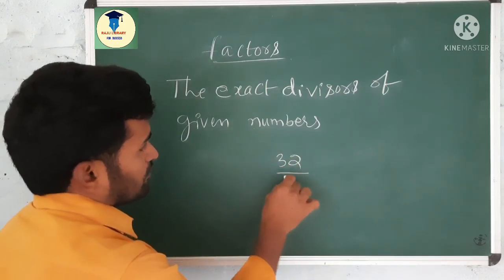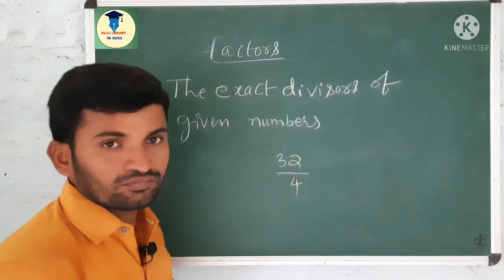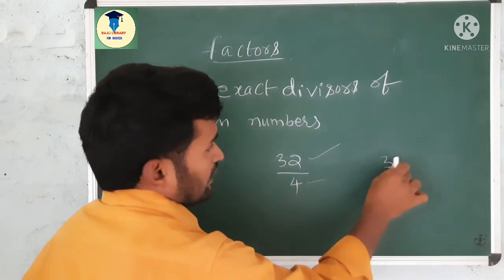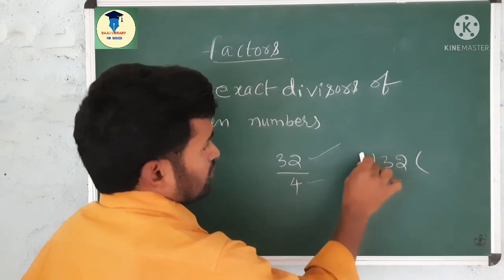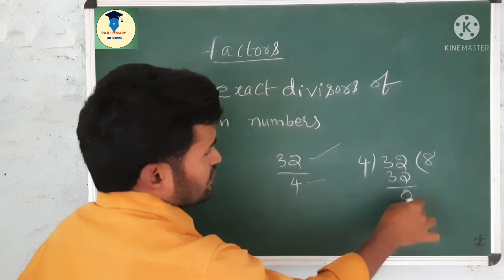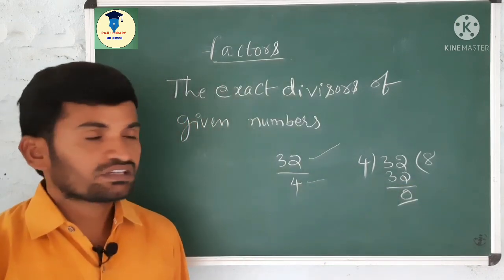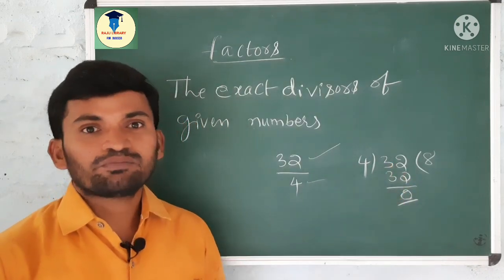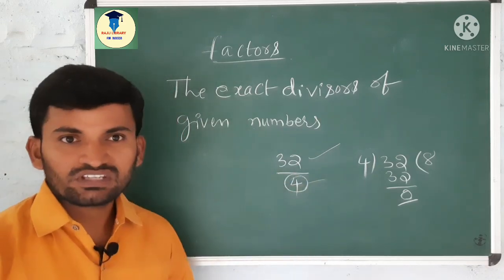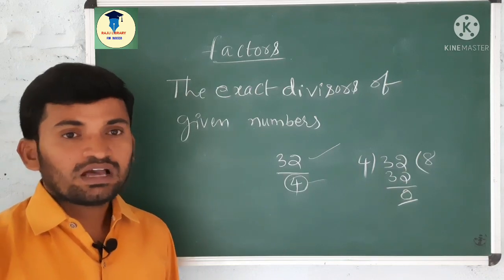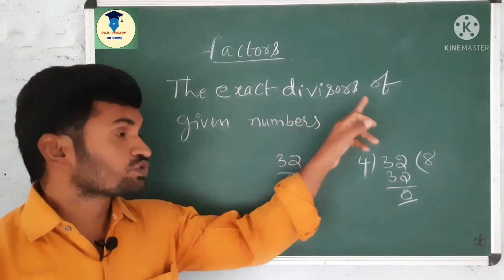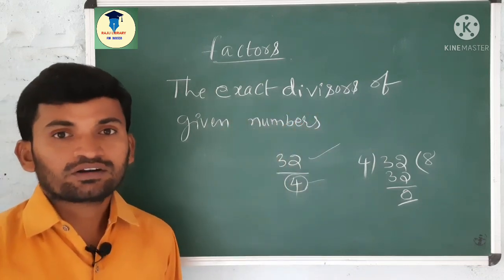If you take 32 divided by 4, here 32 is exactly divisible by 4. Let us check: 8×4 is 32, the remainder is 0. It means 32 is exactly divisible by 4. So here, this is the divisor. Divisor is also called as factors. So, the exact divisors of given numbers are factors.